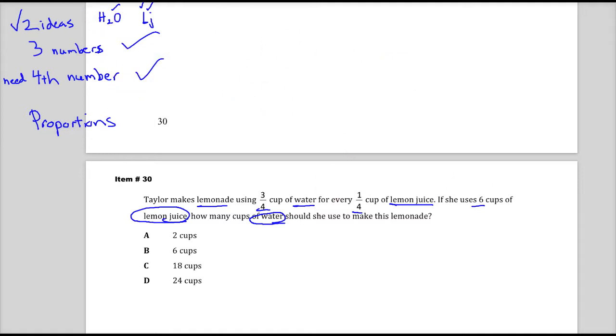So what I'm going to do is set up a ratio or fraction, whatever you want to call it, for the recipe. So this is the recipe fraction, ratio, whatever. So I'll put 3/4 of water over 1/4 of lemon juice. Now for the other side of it, for whatever she makes, so her lemonade, that's some bad handwriting.